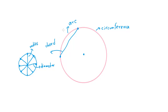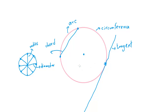A tangent is a line that intersects the circle at exactly one point. If a line intersects the circle at more than one point, it is not a tangent.